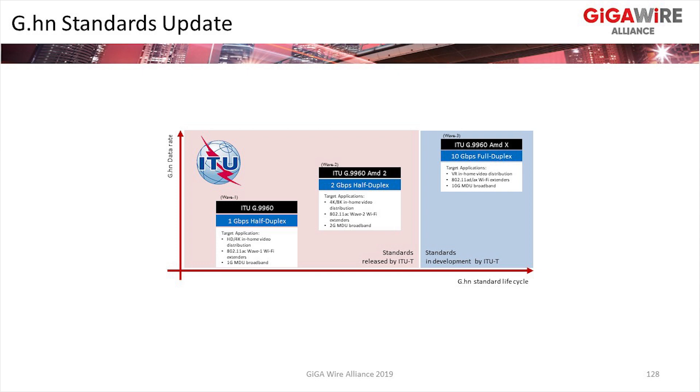A bit about G.HN standards. The first generation G.HN, which some saw in powerline adapters, does about 1 Gbps full duplex — that's what Korea initially deployed. A couple of years back we got G.HN Wave 2, which does 2 Gbps aggregate, and that's what TELUS is deploying today. We're continuing to evolve with G.HN Wave 3 — the ITU-T spec is still unnamed — targeting 10 Gbps full duplex, with optimized forward error correction, optimized retransmission, and other neat tricks.